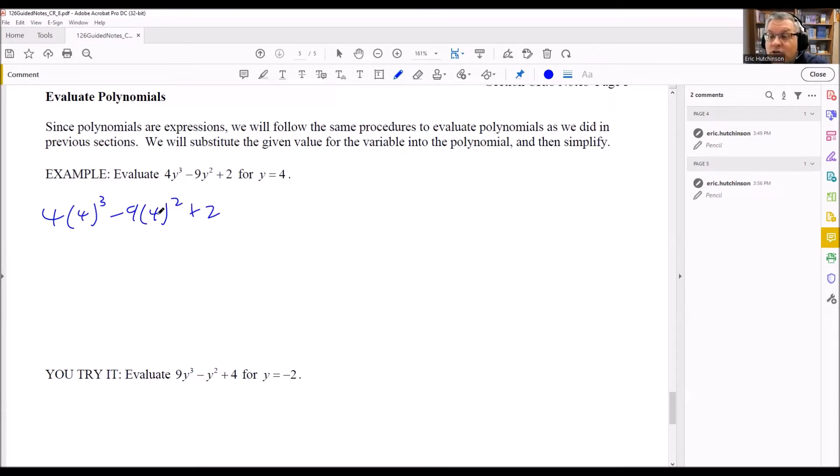So now we just need to evaluate this. So we need to get a numerical answer as a result here. So this is 4, 4 times 4 times 4 is going to be 64. So we just have that here, 4 times 64. And then this, we have 9, and then 4 squared is going to be 16, and then we have plus 2. Notice there that I did the exponents first.